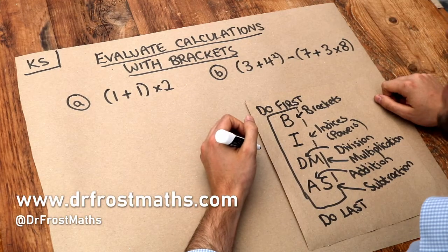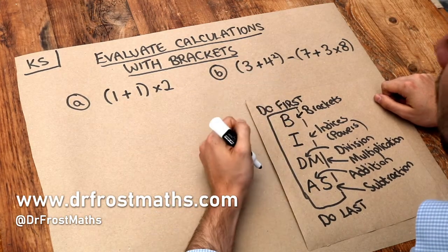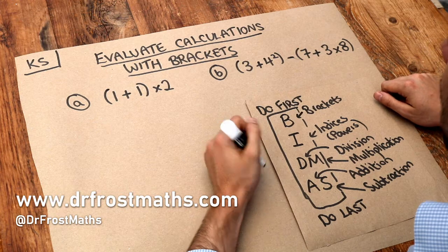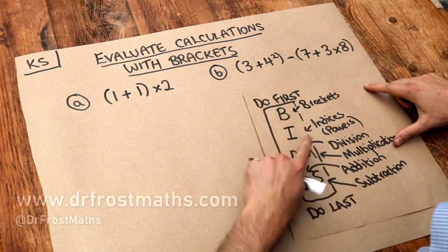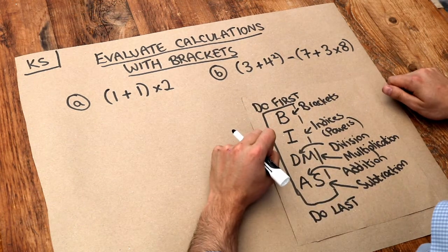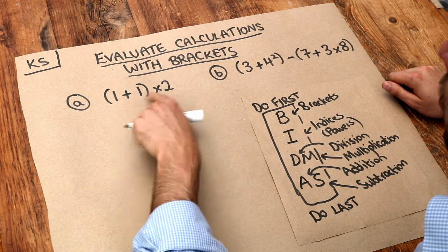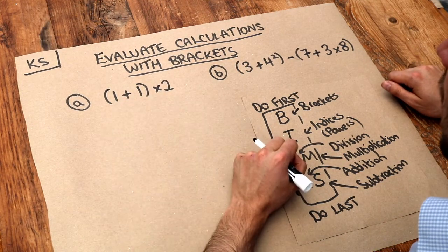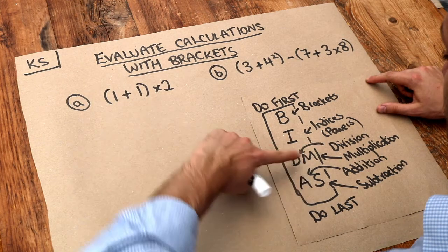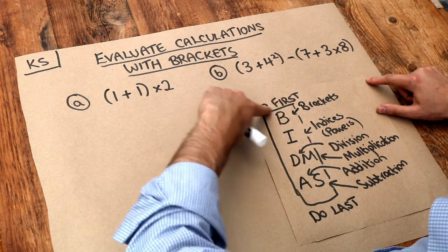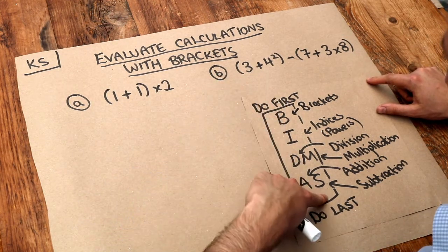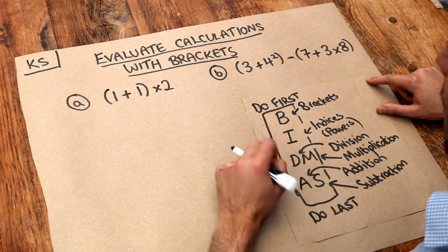Hello and welcome to this Dr. Frost Maths key skill video on evaluating calculations with brackets. In the previous videos on this topic, we saw how we could use something called BIDMAS to work out the order in which we do operations within a mathematical expression. So anything that's higher up BIDMAS we do first, and if you're lower down we do that later. We do it last if we're at the bottom here.